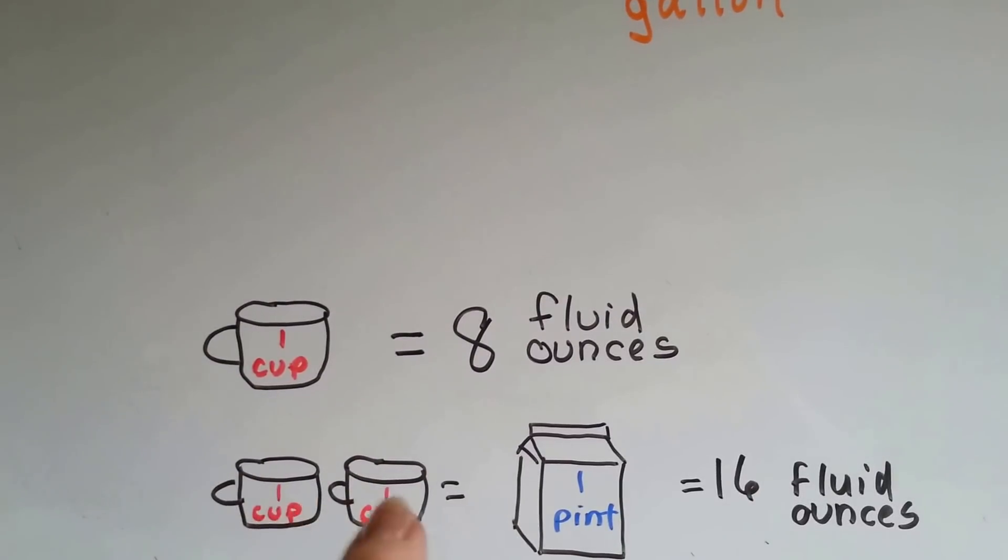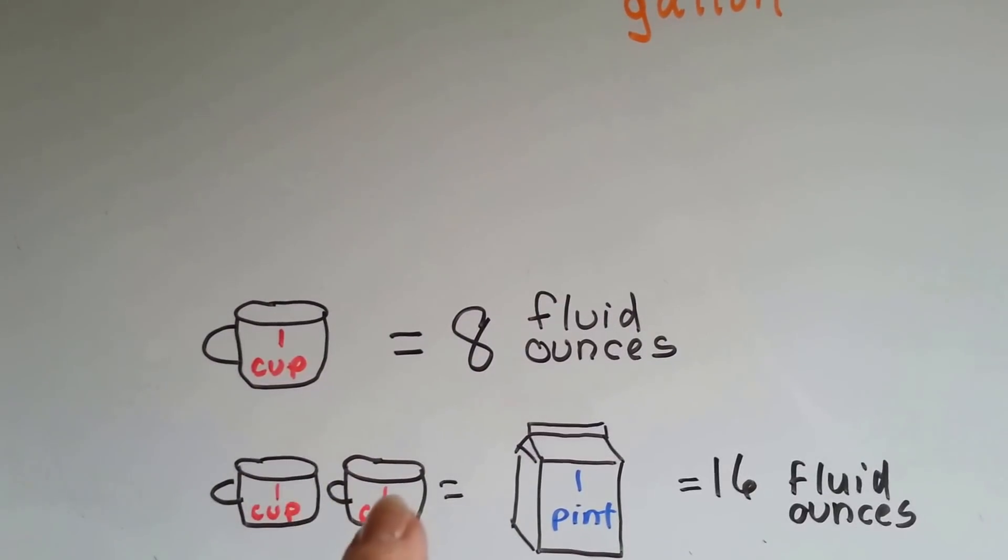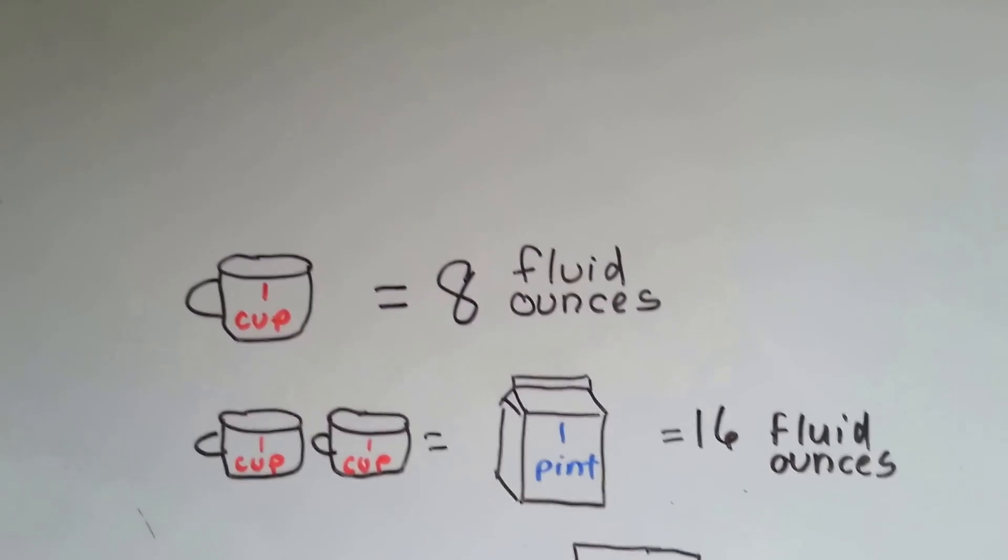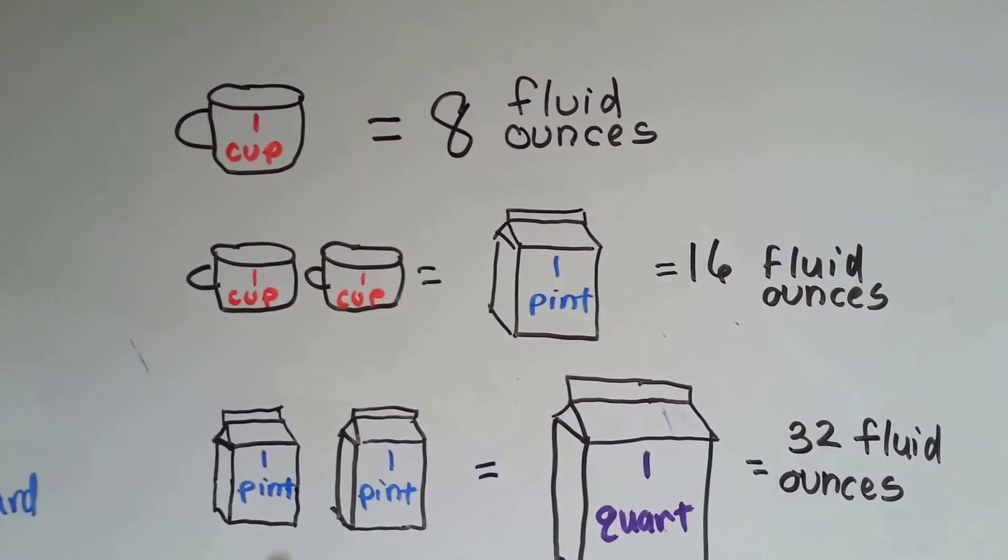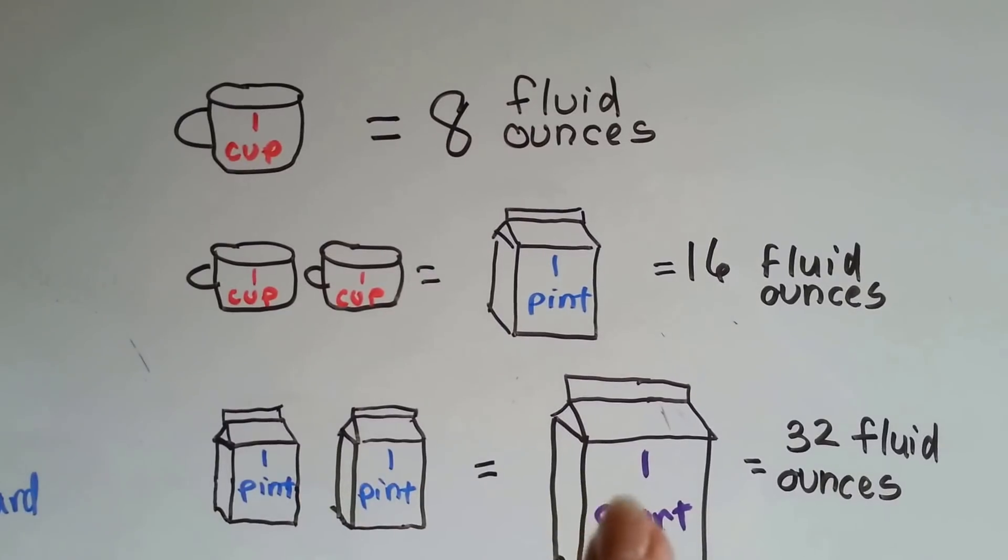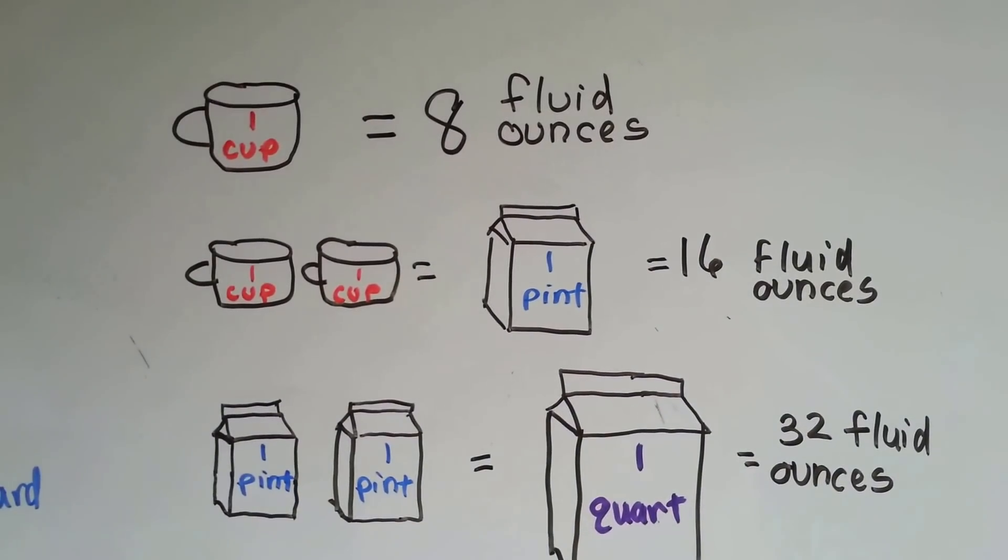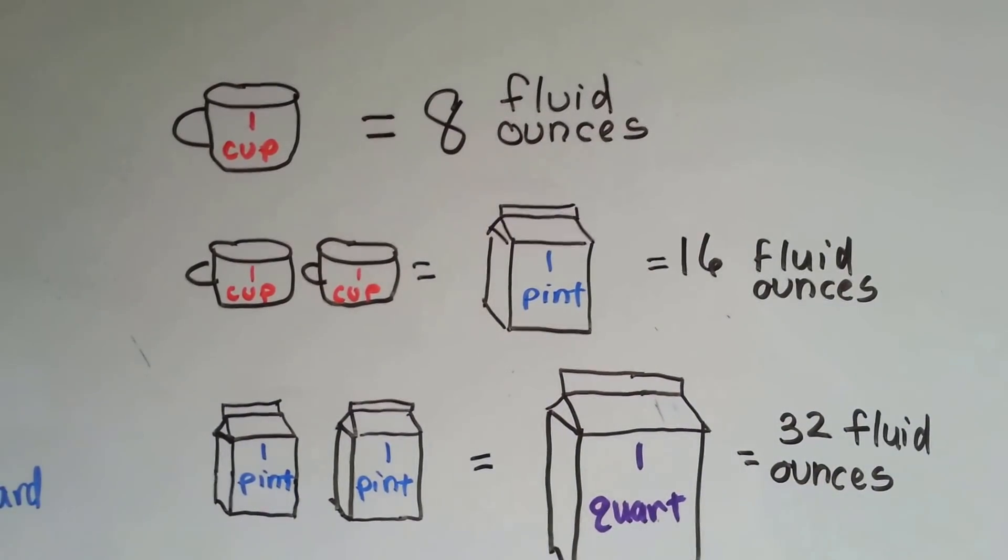Because there's eight ounces in each of these cups, eight plus eight is 16, 16 fluid ounces. There's two pints in one quart, so each quart is 32 fluid ounces.